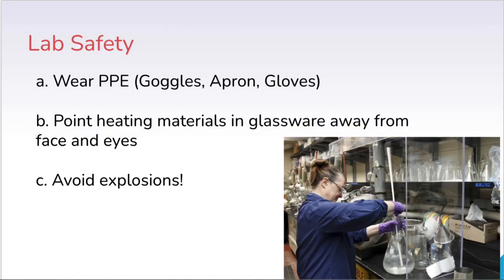A few last minute safety reminders: always wear PPE or personal protective equipment in a laboratory environment. If you're using heat, make sure you have an apron and gloves, but generally you want to always wear goggles. When you're using something that has heating materials, you want to point that glassware and the openings away from your face and eyes because you don't want something hot to splash up into your face. Make sure you avoid explosions by not putting stoppers into test tubes when you heat them up. You can see this woman here, she's wearing a protective apron, gloves, and goggles in order to prepare her materials.